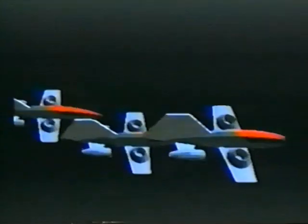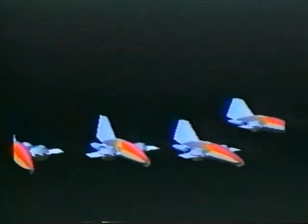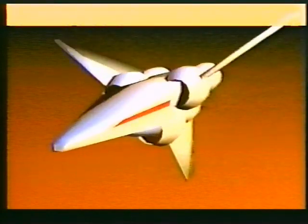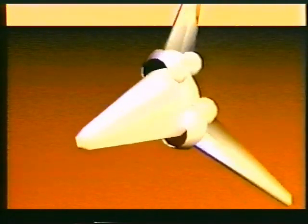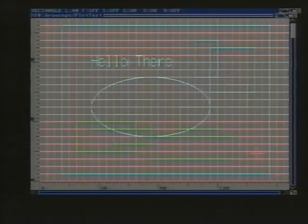The Amiga also supports another mode called Interlace. This mode is useful when working with video projects. Interlace is the ability to display a series of information on the screen in two segments — half the information, broken out into every other horizontal line, is displayed every 30th of a second, while the other half is displayed every other 30th of a second. While in one of the higher-resolution modes, display highly contrasting colors and you'll see the interlace flicker.